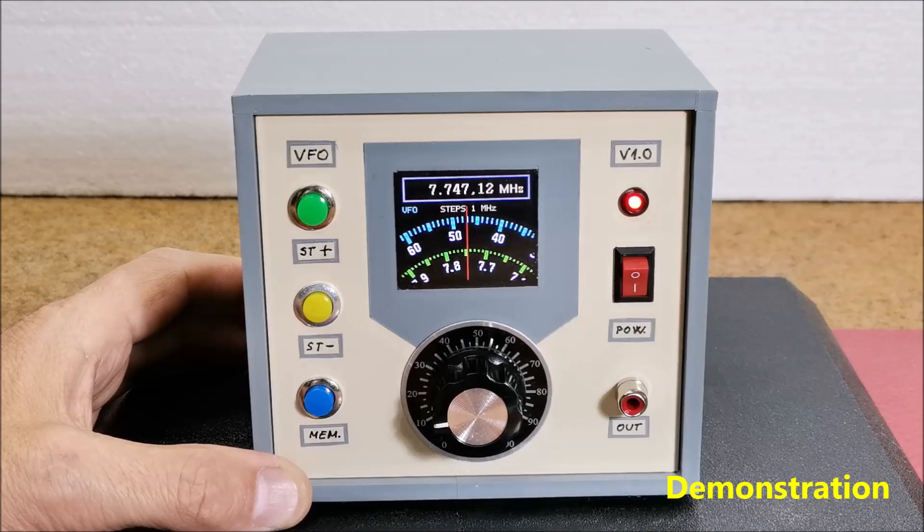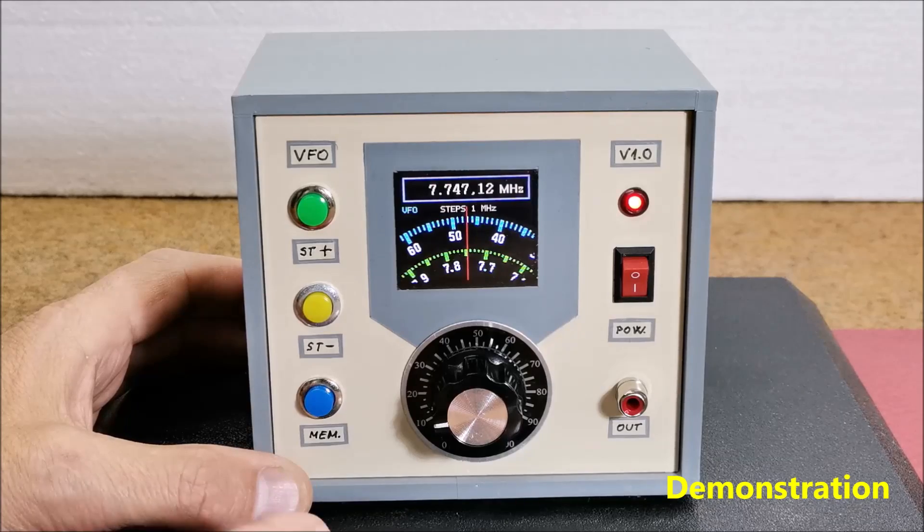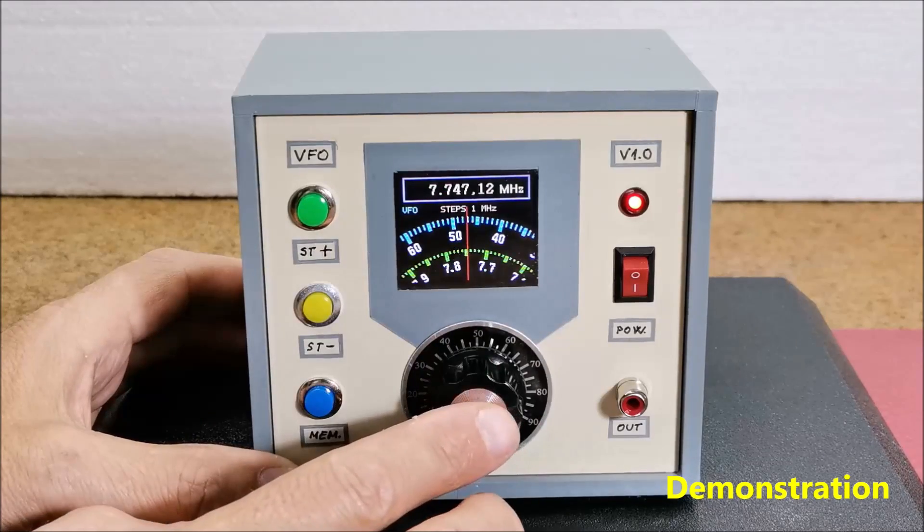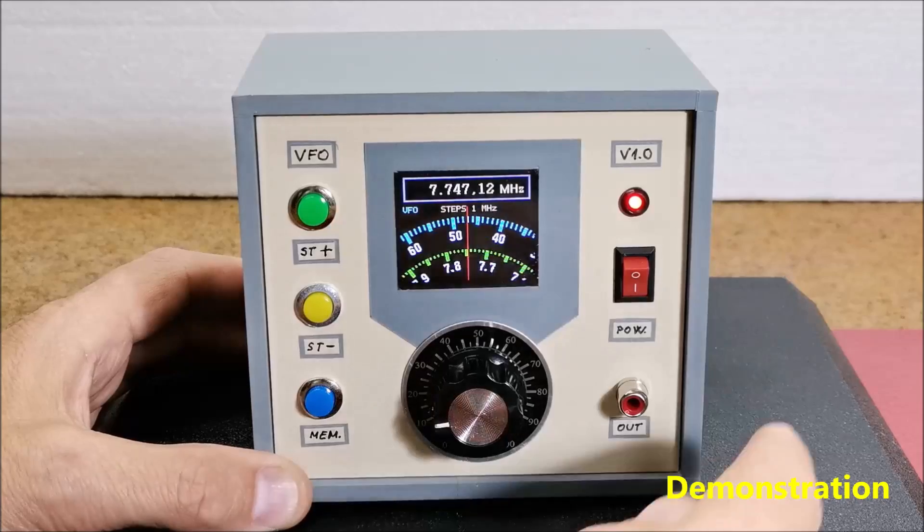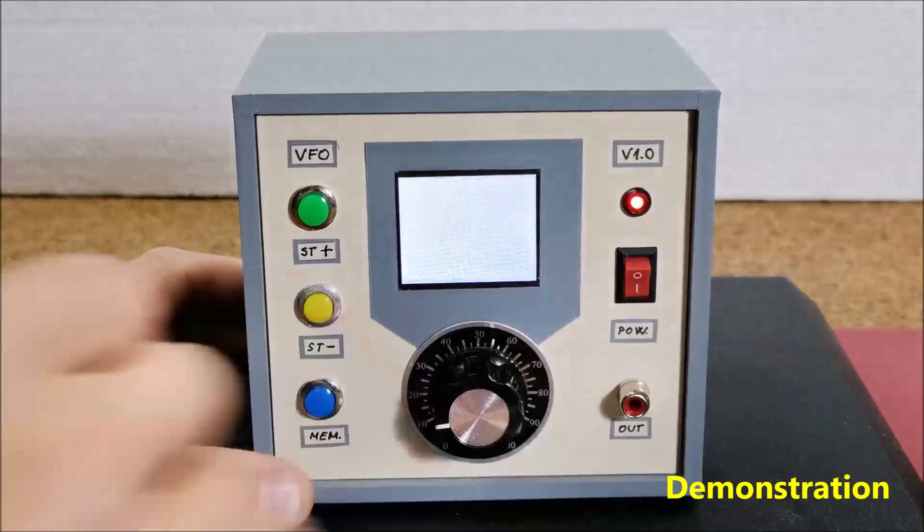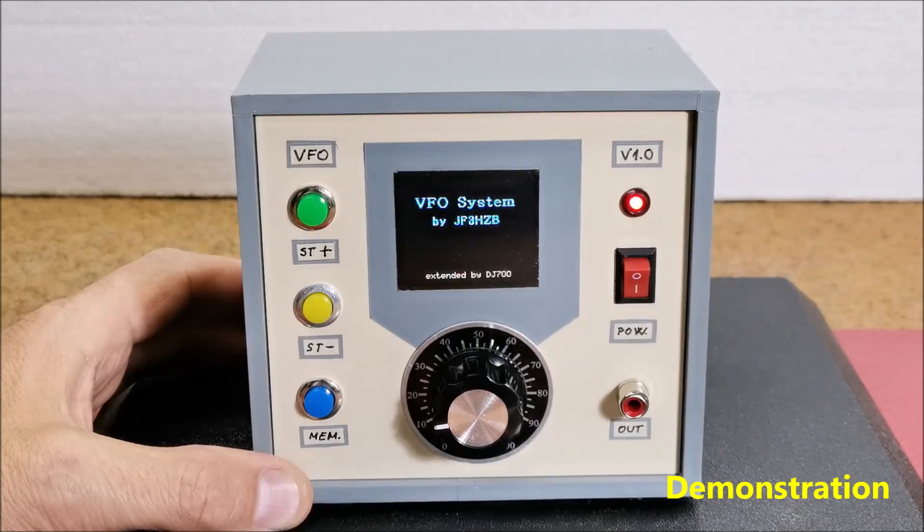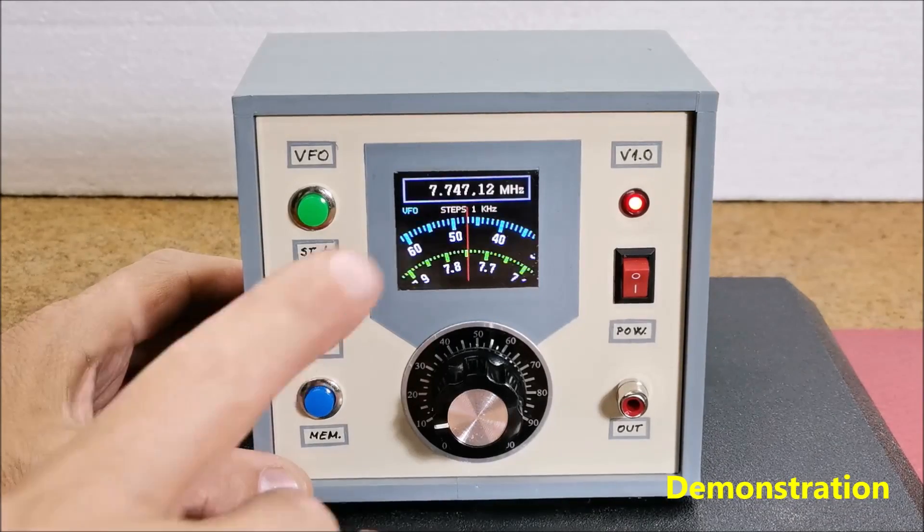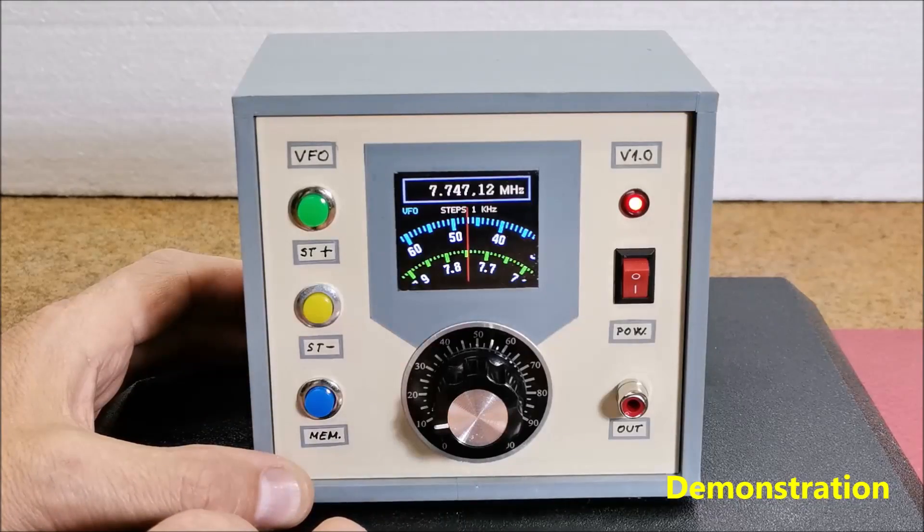With the rotary encoder button we memorize the current frequency and after the next power on the device it will be the initial frequency. 7.7 MHz - we can memorize that frequency and next time after turn on it will be the initial frequency.